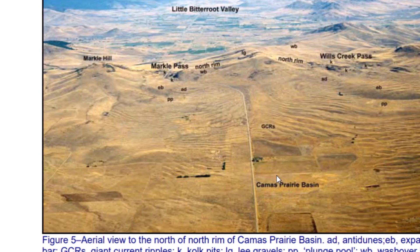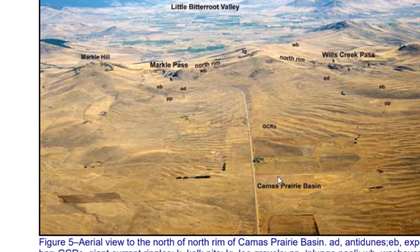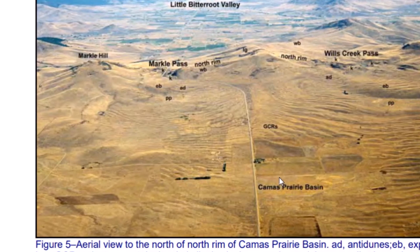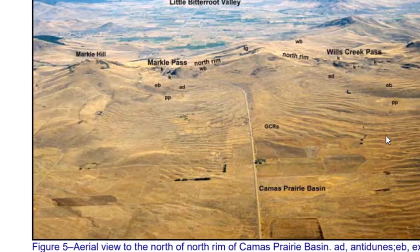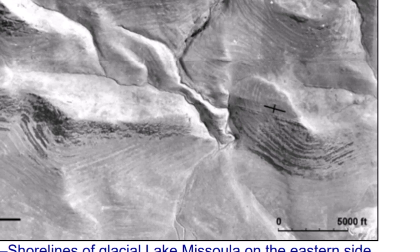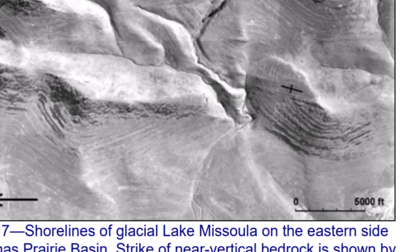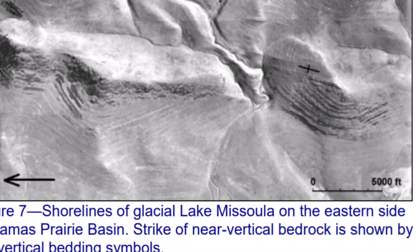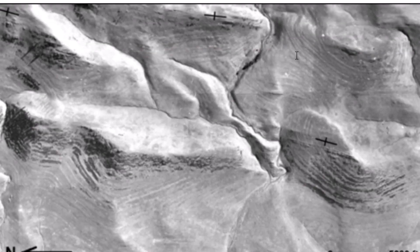What could have possibly caused that much water to pour over these ridge lines, deposit material uphill, and then over these ridge lines making these massive flood deposits? I don't think we have it figured out yet, and I think we probably should — since we really don't have a logical explanation for the melting of the ice caps and how that happened in the period it did. But here in this area of the world is evidence of one of the biggest floods that probably ever happened on Earth. Here's the eastern side of Camas Prairie — it says 'The shorelines of Glacial Lake Missoula on the eastern side of Camas Prairie basin — strike of near-vertical bedrock is shown by the vertical bedding symbols' — giving you evidence of an ancient flood.